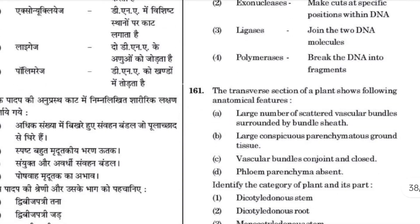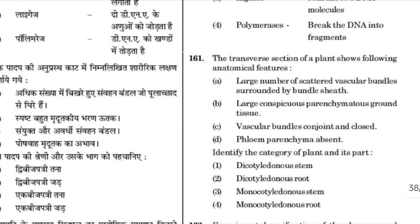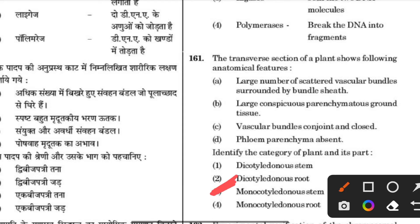The transverse section of the stem shown in the anatomical figure represents a monocotyledon stem — the answer is 3.